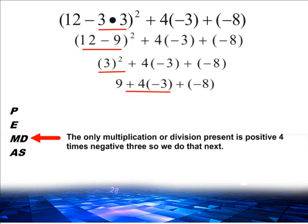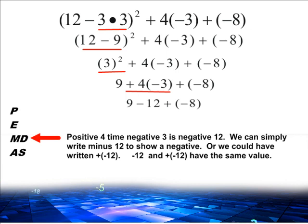So the next step in this math expression is to multiply positive 4 times negative 3, which gives us a product of negative 12. Directly underneath positive 4 times negative 3, we will write minus 12, or you may write plus negative 12 if you prefer. Both of these mean the exact same thing.